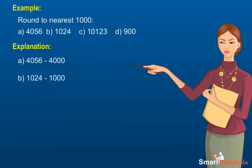c) 10123 lies between 10,000 and 11,000. Since it is closer to 10,000, it is estimated as 10,000. d) 900 lies between 0 and 1000. Since it is closer to 1000, it is estimated as 1000.